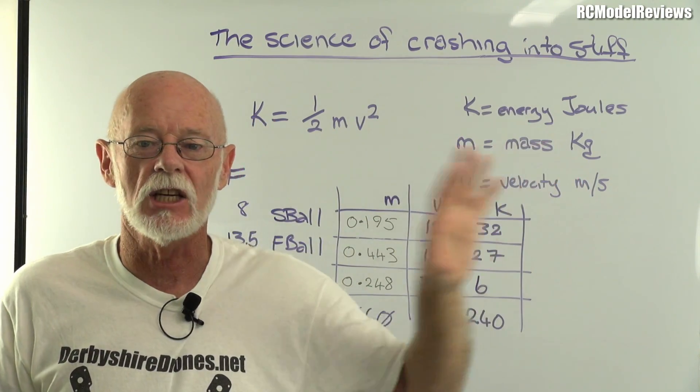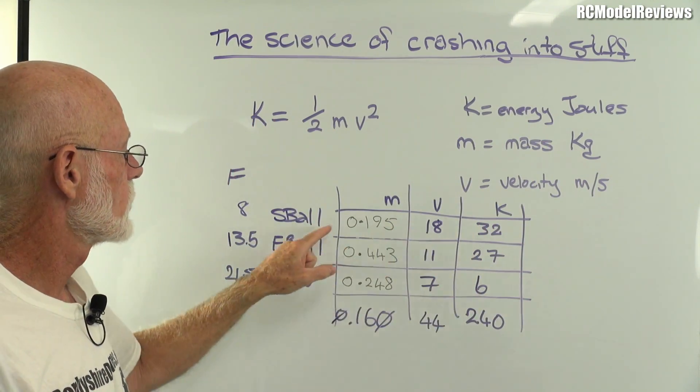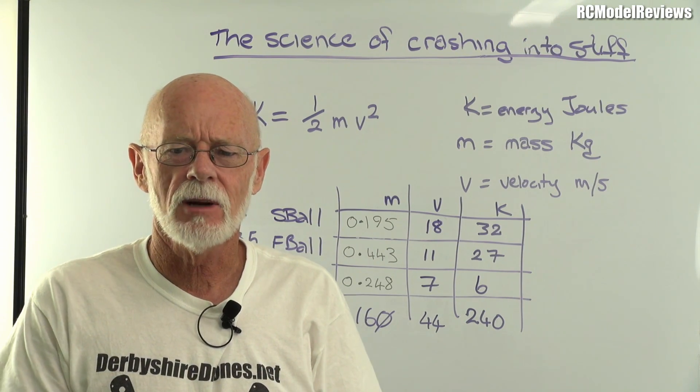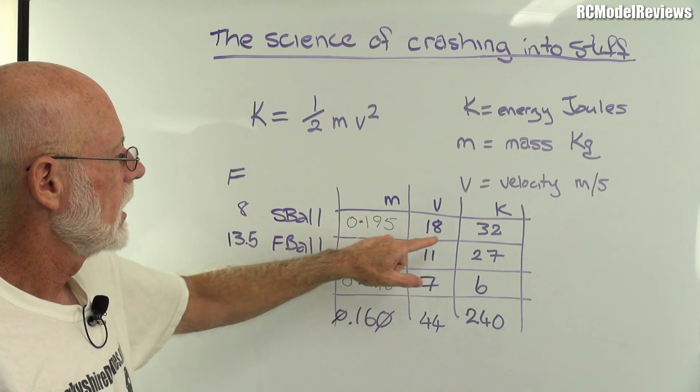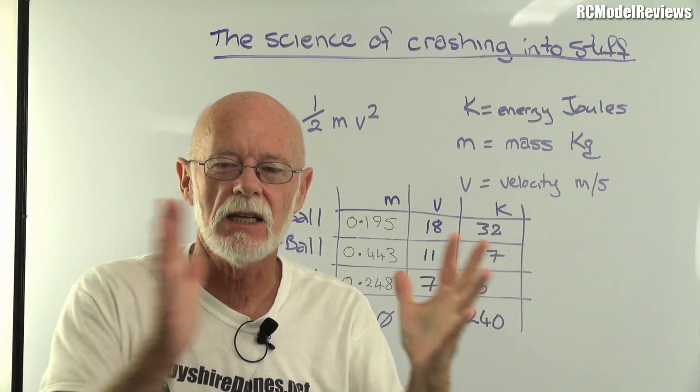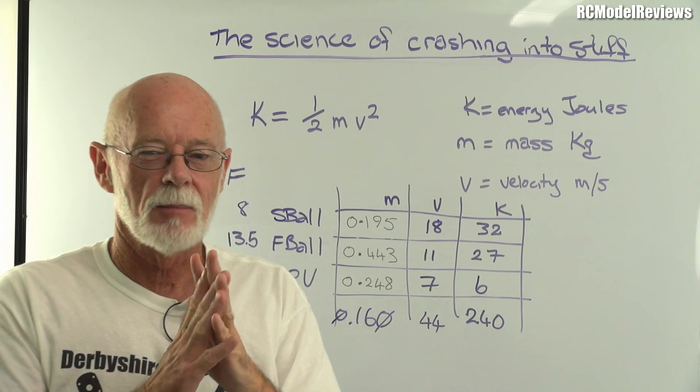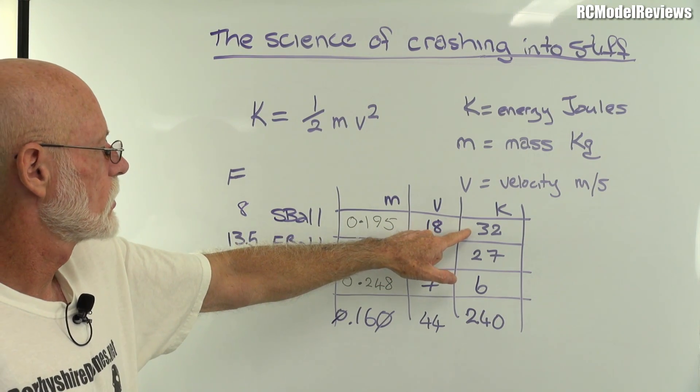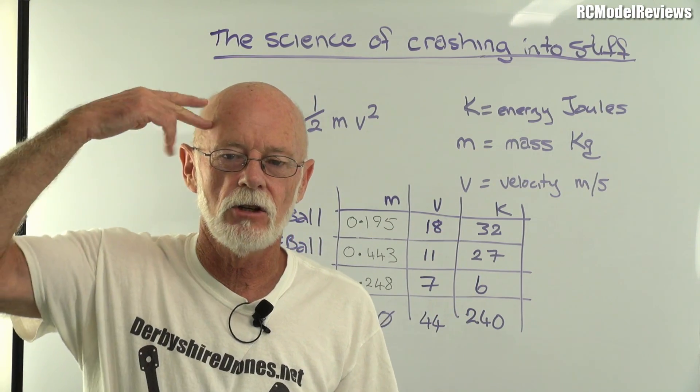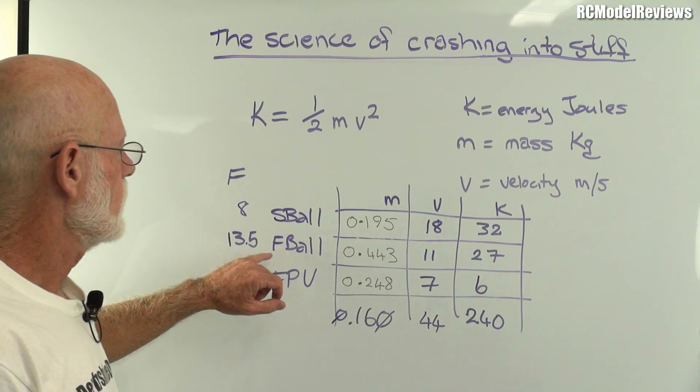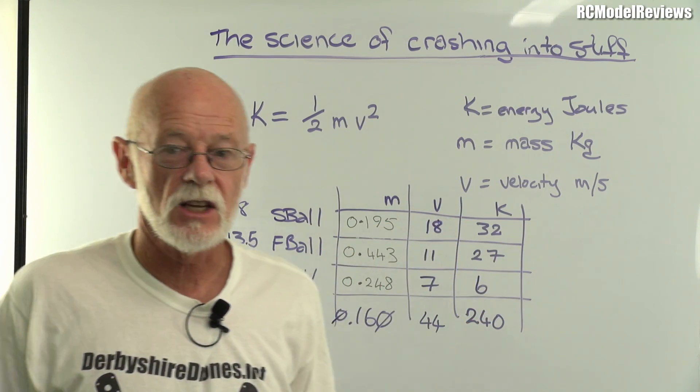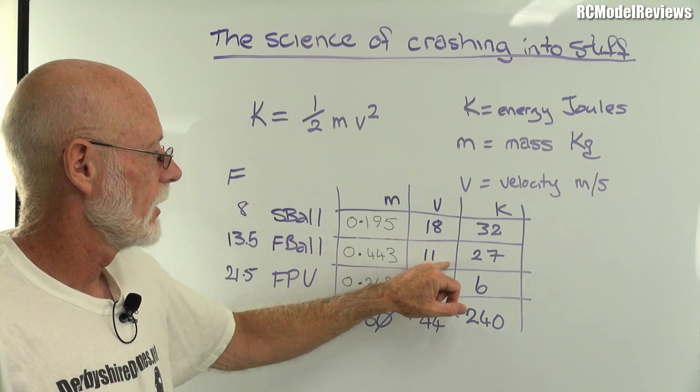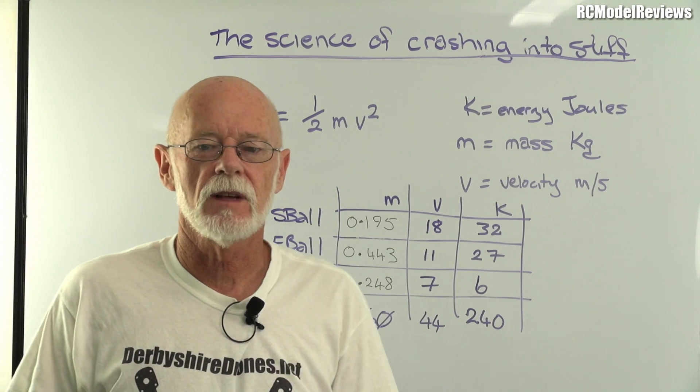I threw all these numbers into this formula to work out the kinetic energy these three objects had. The softball, although it was only 195 grams, had the most kinetic energy at 32 joules. Why did it have so much energy? Even though it was lighter than these others, it was traveling much faster. As I said, the velocity makes the big difference. Double the speed, four times the energy. So if you get hit in the head with one of my pitches, you're going to get 32 joules of energy transferred into your skull. The football I got 27 joules of energy, so it's nearly as much as the softball, but it weighs over twice as much but is traveling slower.